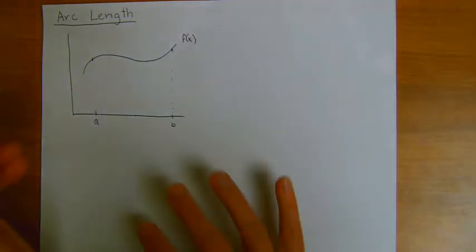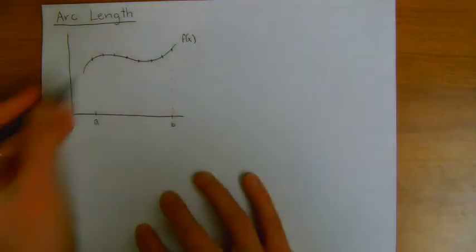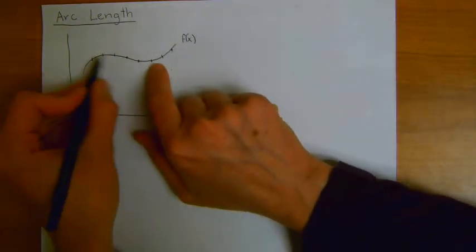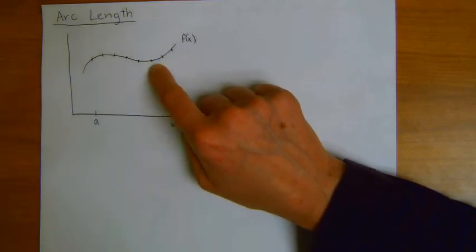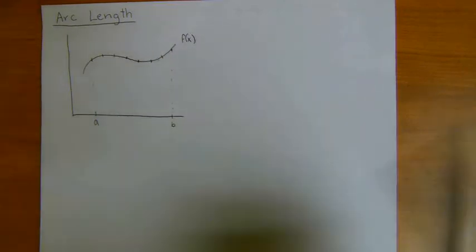The idea is that we're going to break up this line into lots of little segments, n different segments. And if I look at one segment individually, and I want to find the length of this one segment in here, I'm going to approximate it by a straight line.